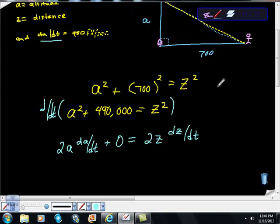As the rocket goes up, this distance keeps changing. So we want to know what is dZ/dt.